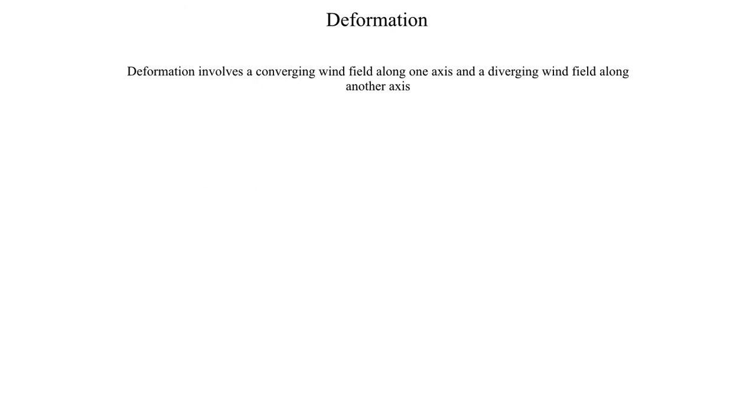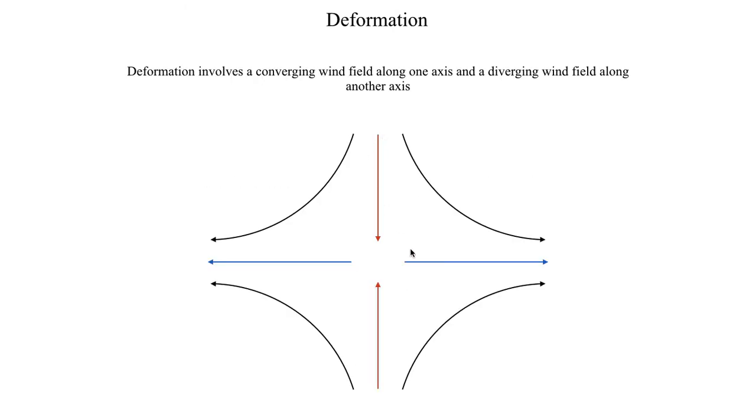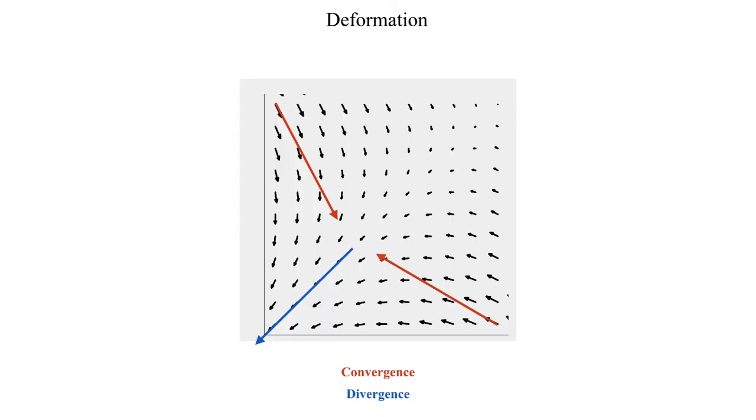And if we want to go back to the highly idealized schematic, this is what that flow pattern more or less looks like. Again, convergence along one axis, divergence along the other axis. So that's going to do it for this segment on deformation. In the next two segments we'll take a look at some examples, some exercises, to test your understanding on the mathematics behind these kinematic flow patterns. So with that, I will see you all in the next segment.